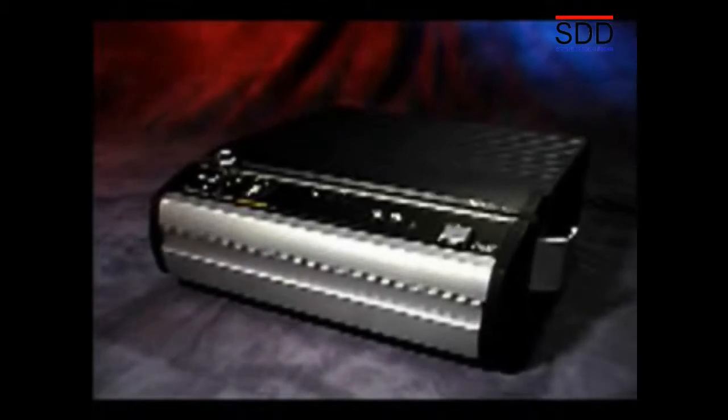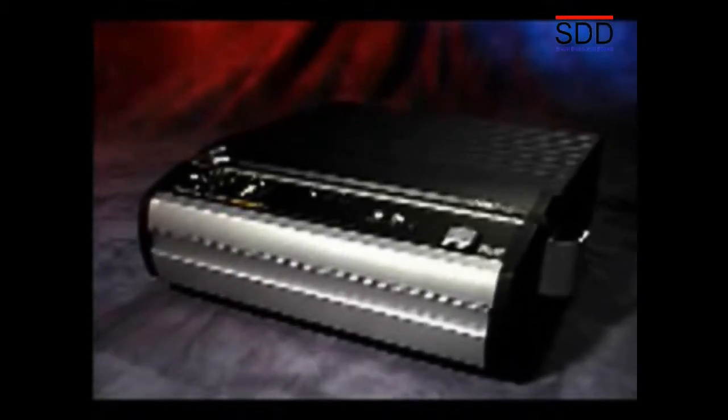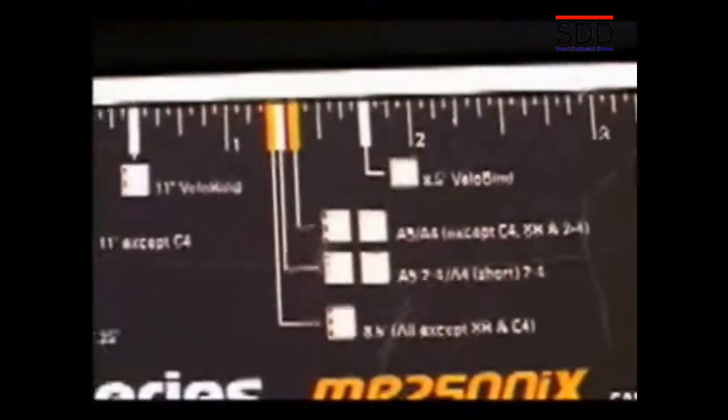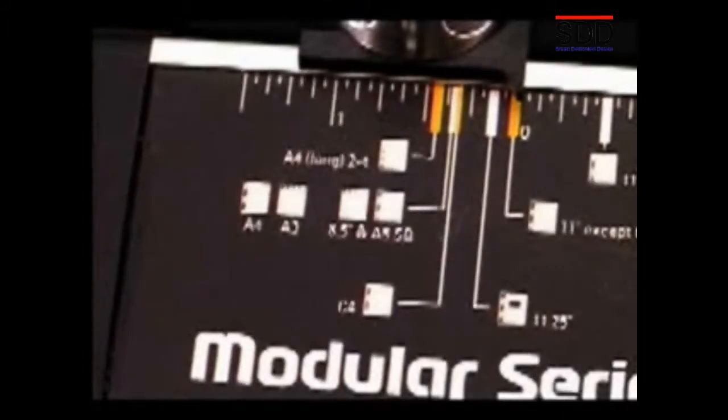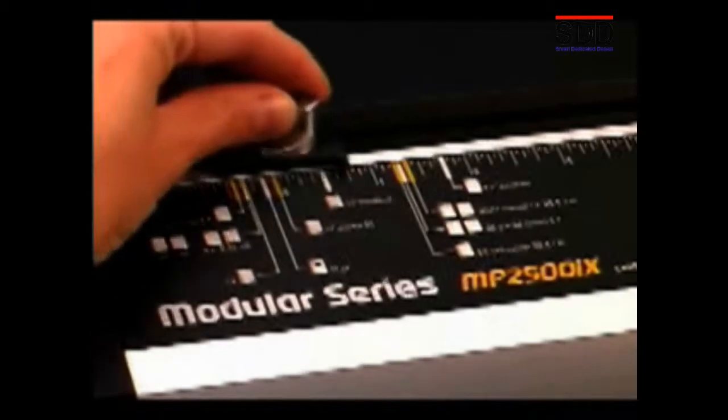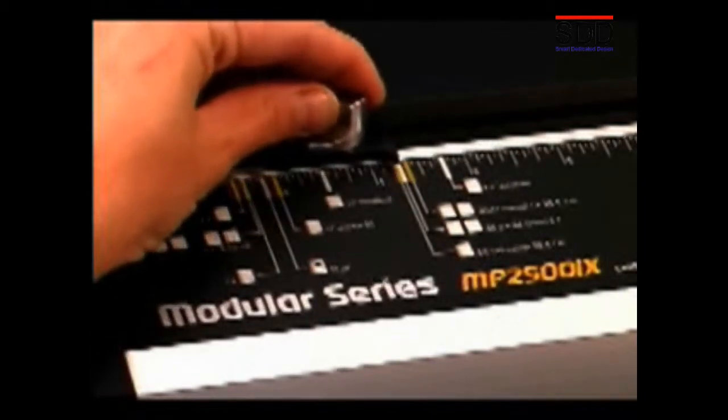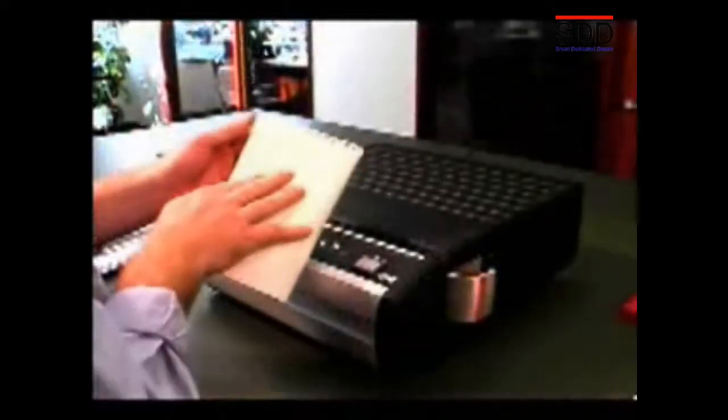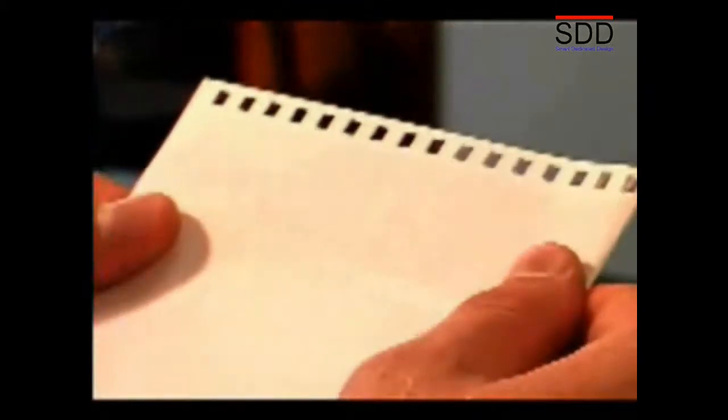Simple controls further enhance the MP2500IX's ease of use. Convenient alignment marks on the deck label show the correct edge guide placements for different punching styles and size documents. The machine's adjustable edge guide helps you quickly and accurately align paper in the punch throat. This ensures that finished documents are properly punched, regardless of the chosen punching pattern.